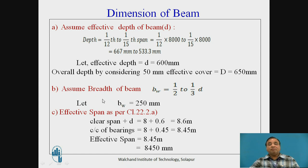So we have to assume the breadth of the beam. Breadth of the beam usually is 1/2 to 1/3 of the effective depth. So 1/2 works out to be 300, 1/3 works out to be 200. Therefore let us assume Bw, that is width of the beam as 250 mm.